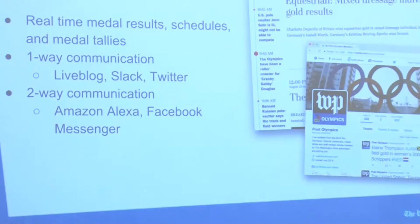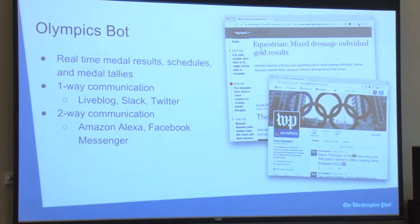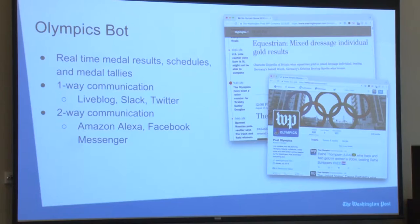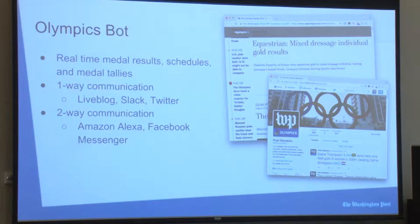Given the highly varying number of primaries on a day, a significant challenge for stream-based one-way communication channels like Twitter was to keep the user informed when there's only one primary, while at the same time not being overbearing on days like Super Tuesday. Learning from the primaries, our Olympics bot was a bit more limited in scope. We provided real-time medal results, schedules, and medal tallies on a number of platforms. We injected short, bot-written posts into our live blog every time a medal was awarded. This was an excellent collaboration of man and machine — allowing the bot to regurgitate data in a readable format while the journalist provides context around that medal.